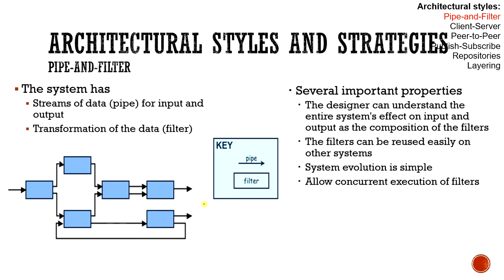The biggest property is that you can reuse your filter. If you want to do this work again, you don't need to recreate it — that filter will be used again. It is easy to understand because input and output can easily be seen. The filters can be used easily, and system evolution is simple. If you want to increase your architecture, you can add a pipe and filter. It can also allow concurrent execution, as multiple executions can be going on at the same time.